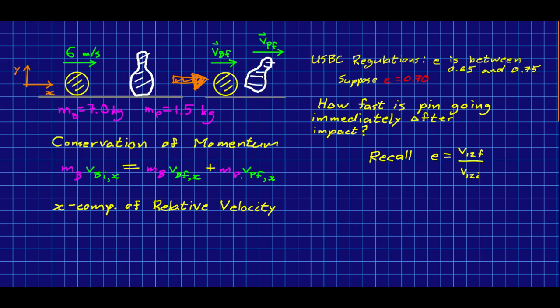Even though this is now an inelastic collision, the solution is actually going to go a lot like the elastic collision that we did in the last lecture. Because we don't know either of these final velocity components, the conservation of momentum equation is not enough for us to solve. So we're going to need to use our x component of relative velocity again just like we did last time except that we have a twist.